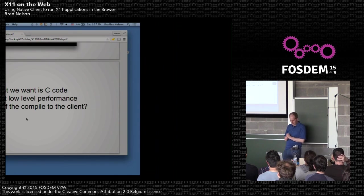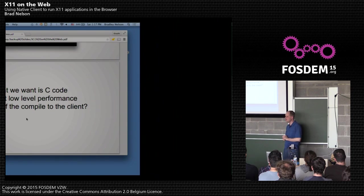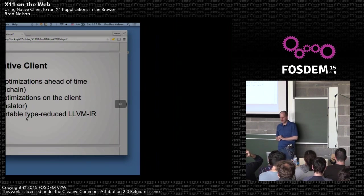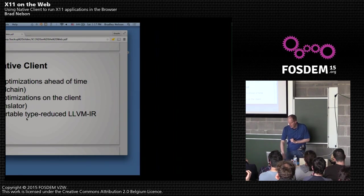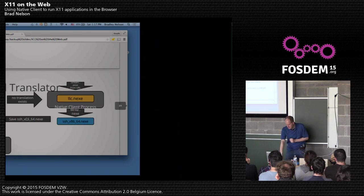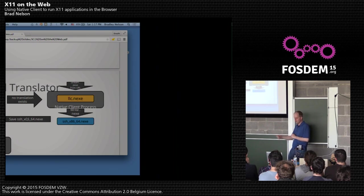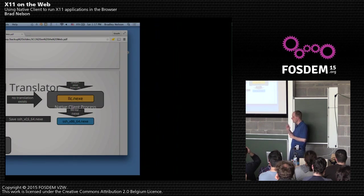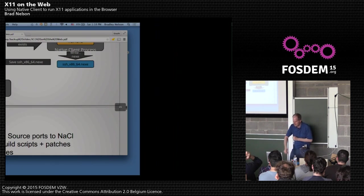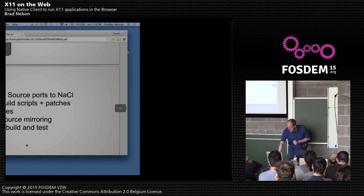A little segue into portability: most of the code folks care about is C code. A potential trade-off is to do all the high-level optimizations ahead of time and then in the browser do the last bit of compilation. That gives us Portable Native Client, where we transmit a flattened version of the LLVM intermediate representation, giving us portability. We do lovely caching — if you've seen a particular portable executable before, you only need to do the translation once. And the translation from portable to architecture-specific is done by a translator that itself runs inside NaCl sandboxed, so you don't have to trust the compiler on the target.